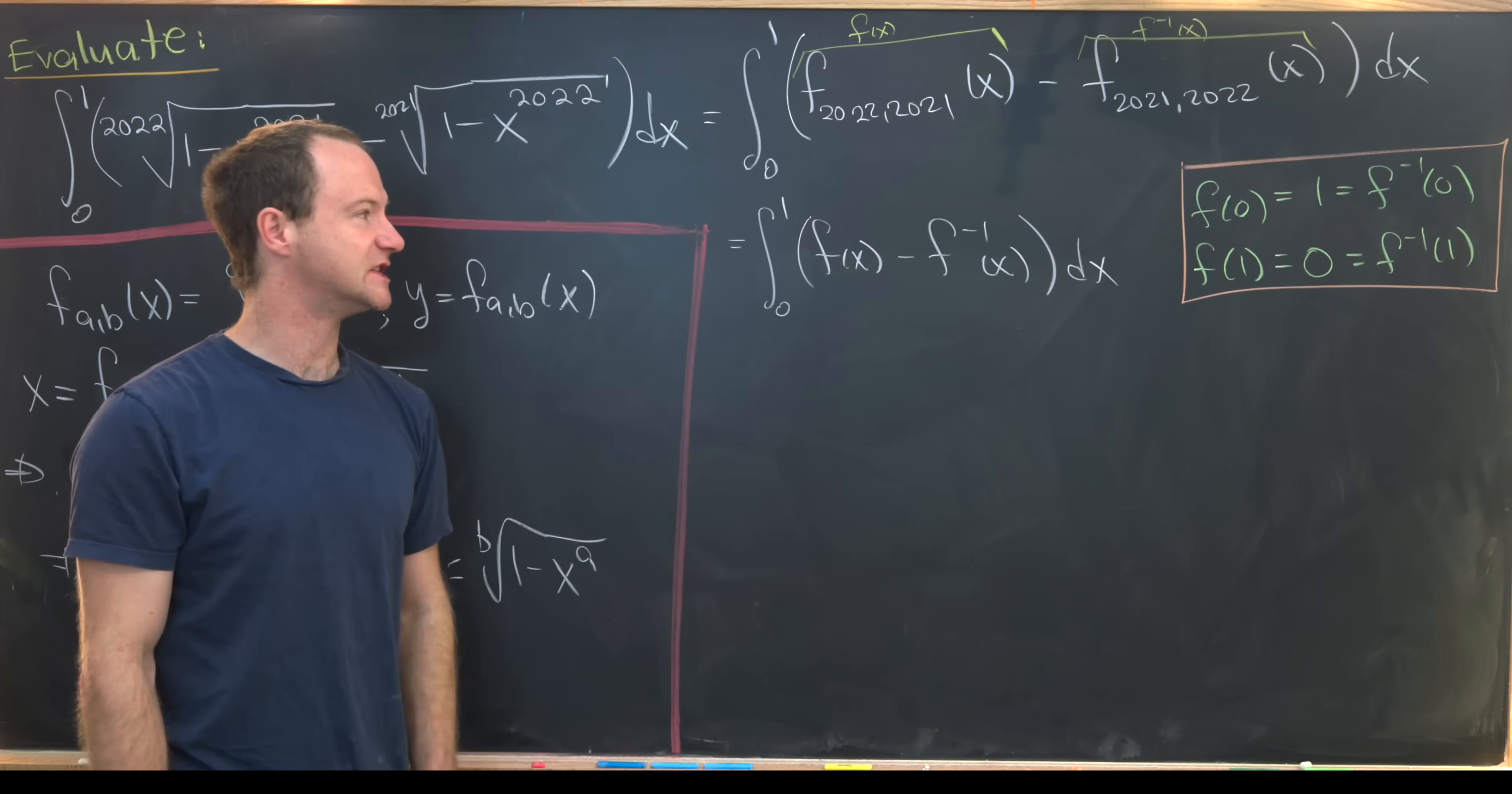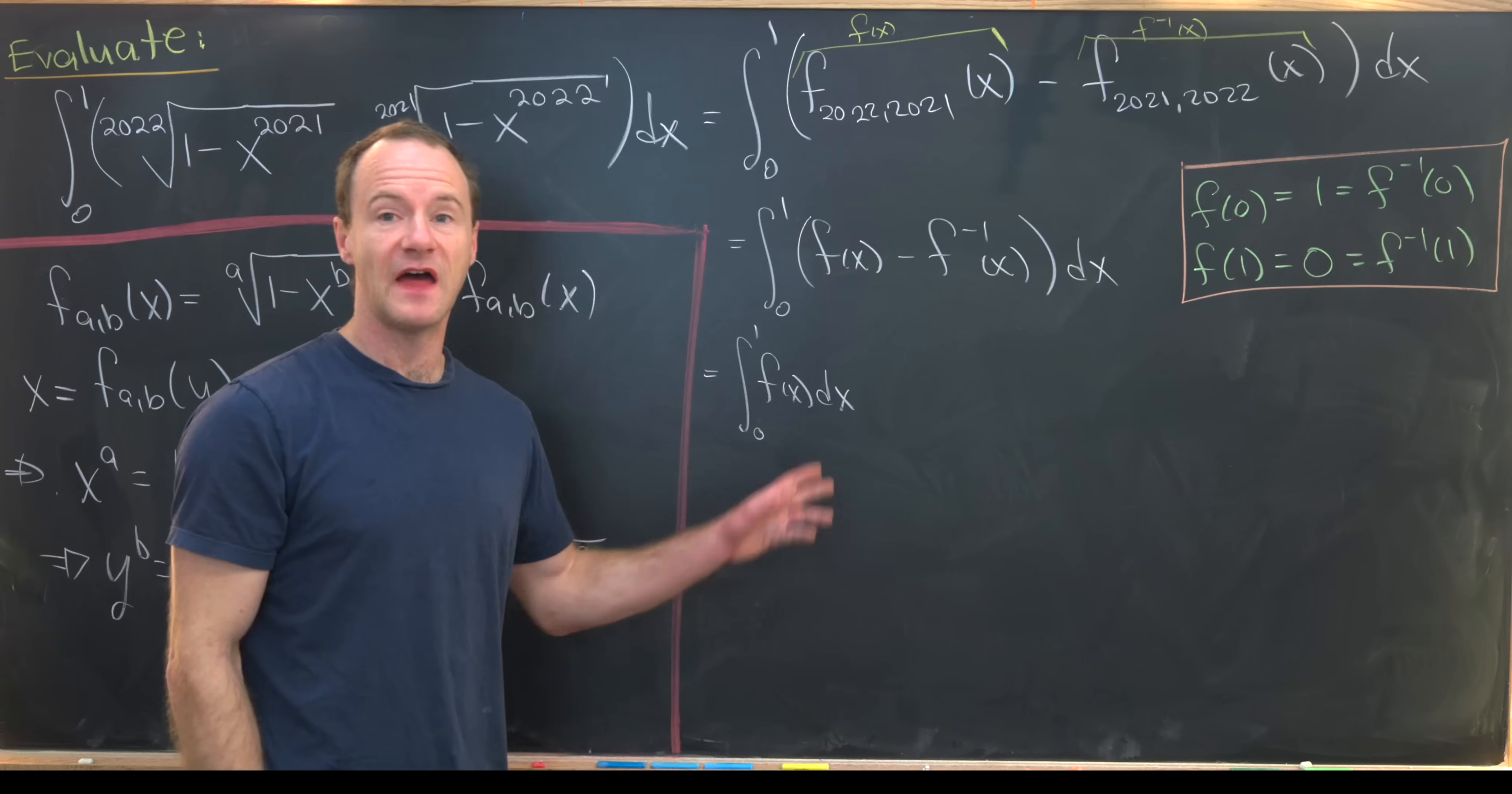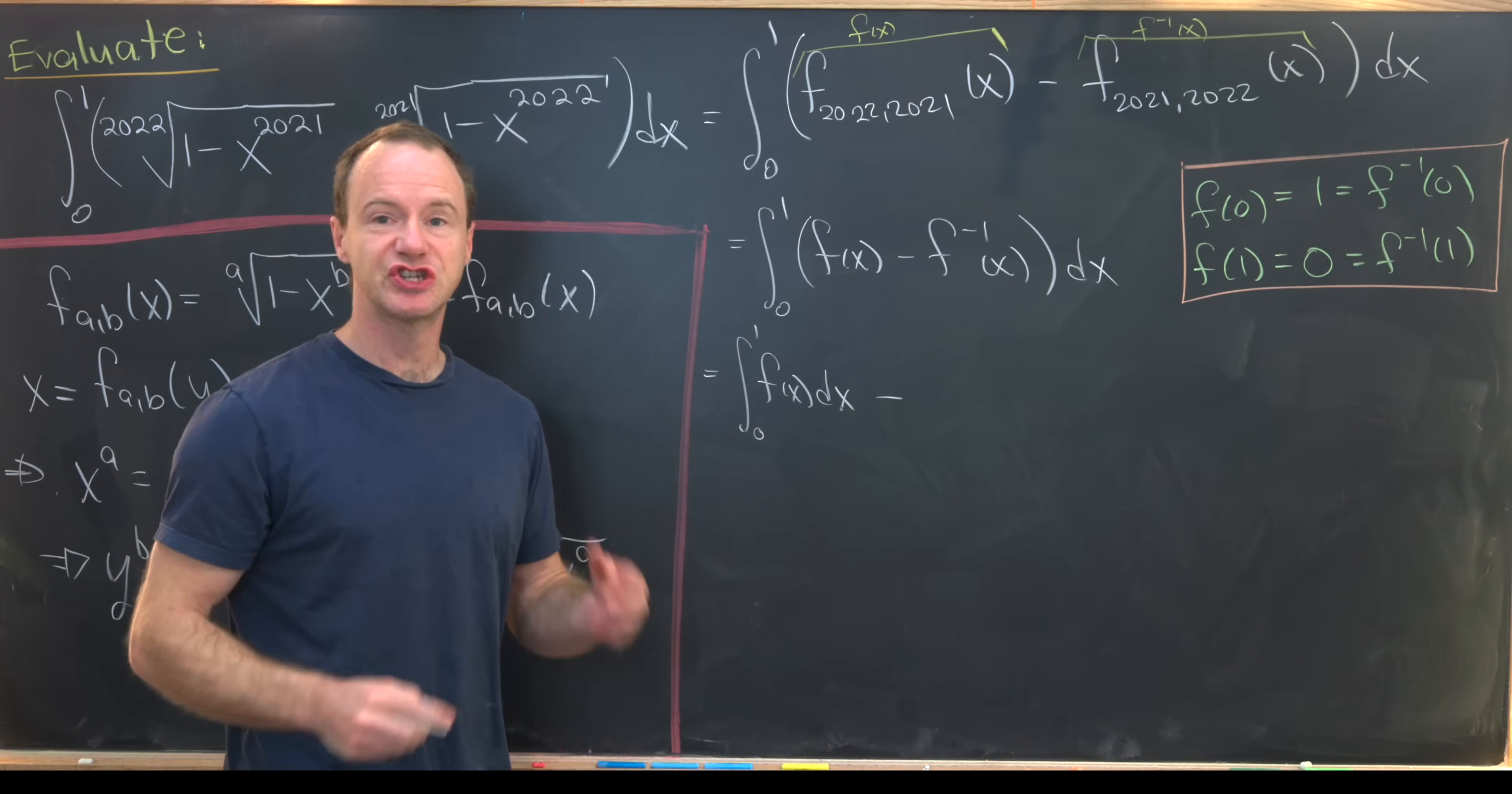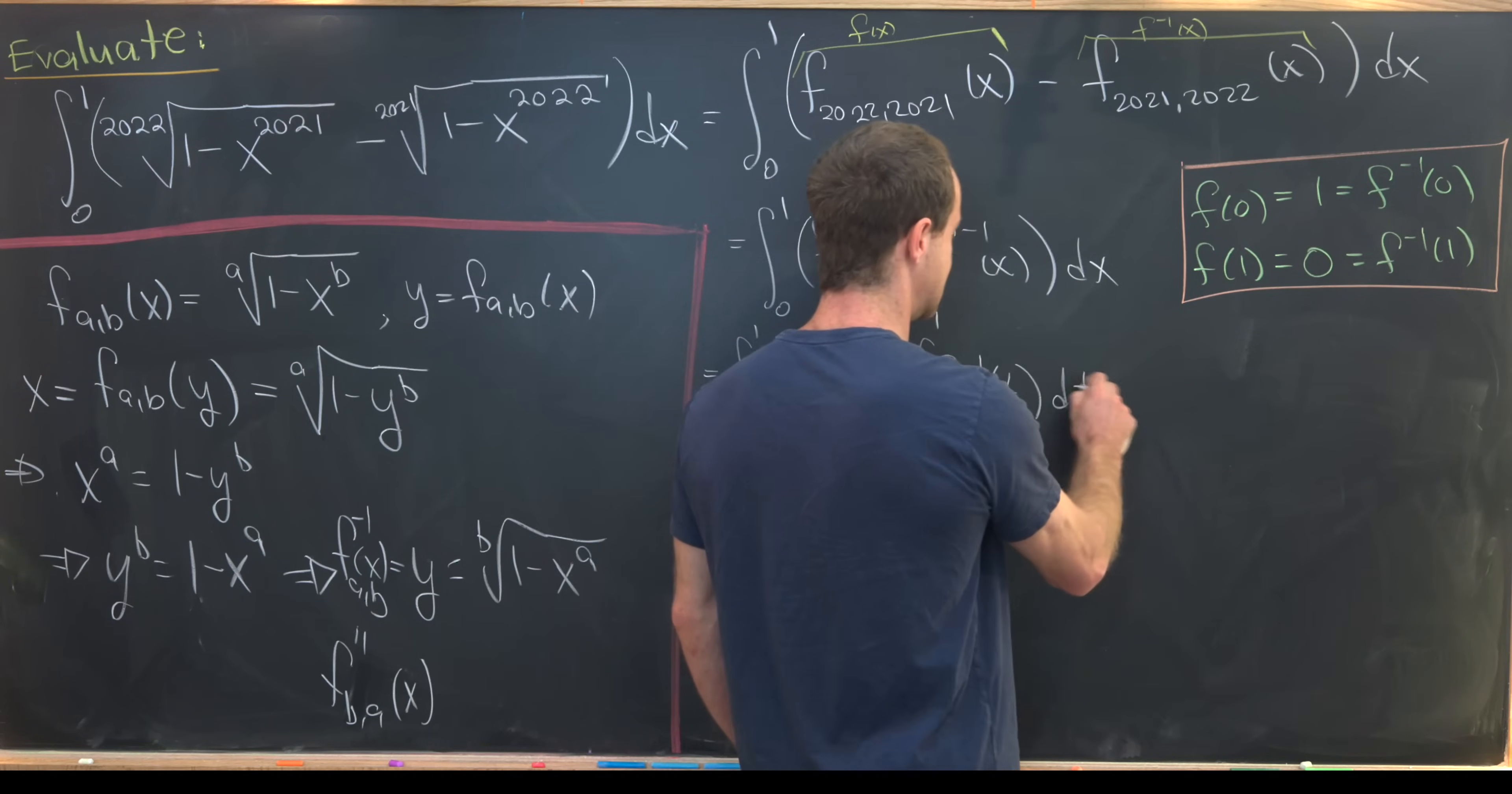We'll separate this into two integrals and then manipulate the second integral. I'll have the integral from 0 to 1 of f of x dx. And when I write the second integral, I'm going to replace the dummy variable x with the dummy variable t. So we've got the integral from 0 to 1 of f inverse of t dt.